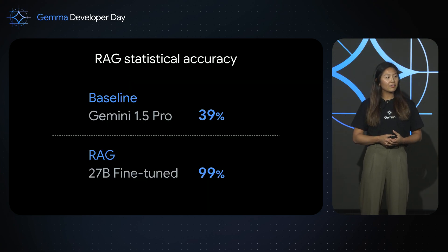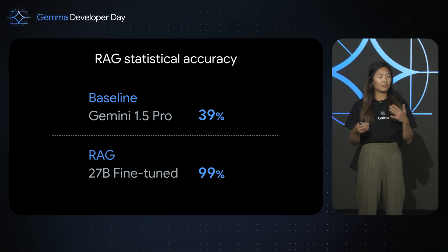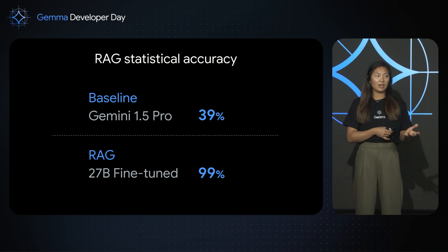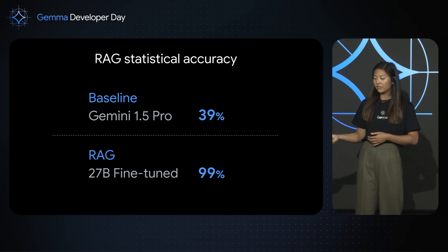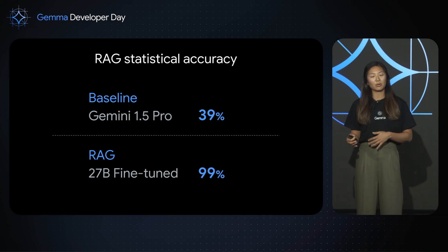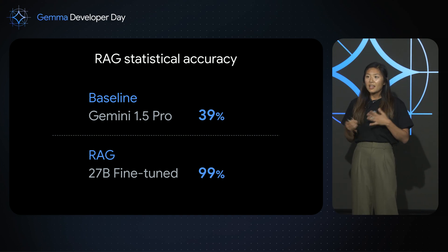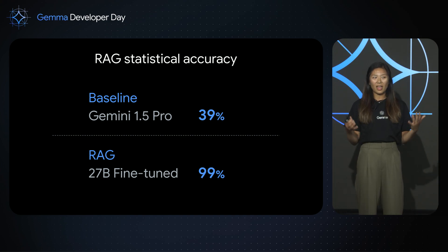In our evaluations of Retrieval Augmented Generation, we compared accuracy of statistical claims against Gemini 1.5 Pro responses to the same queries. We found that Retrieval Augmented Generation responded with more statistics, and those statistics were accurate 99% of the time, compared to only 39% of the time with Gemini 1.5 Pro. These are still early results, but very exciting, and our performance can be improved by increasing our data coverage.